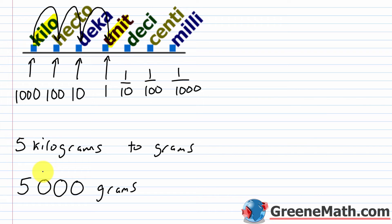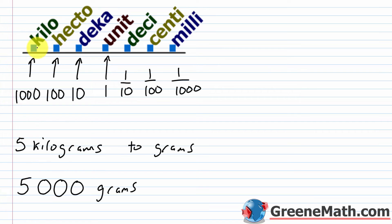The only thing you might struggle with is memorizing the prefix chart order. A helpful mnemonic is: King Henry Died Unexpectedly Drinking Chocolate Milk — standing for Kilo, Hecto, Deca, Unit, Deci, Centi, Milli. If you can't remember that, just write out the prefix chart a few times while doing some examples and you'll memorize it.